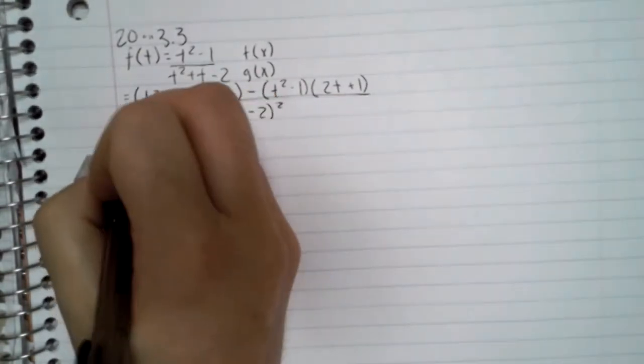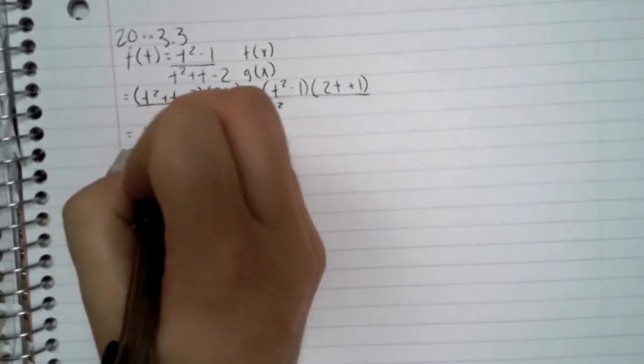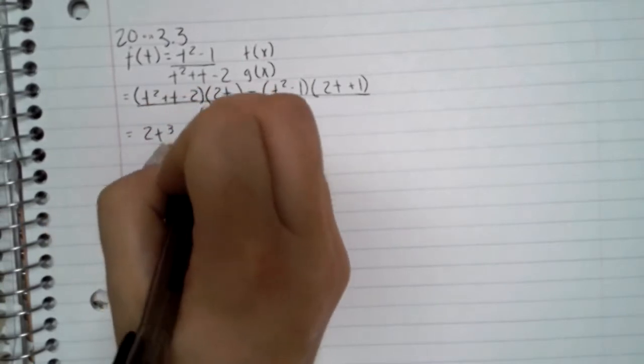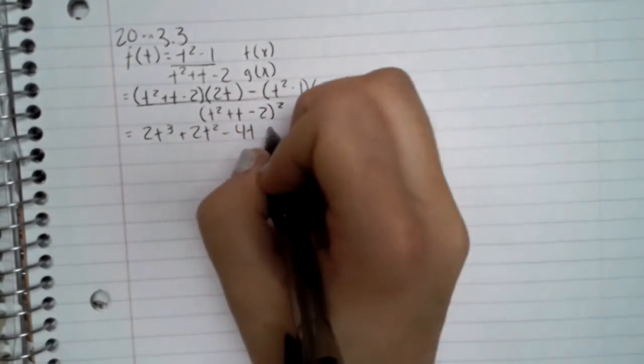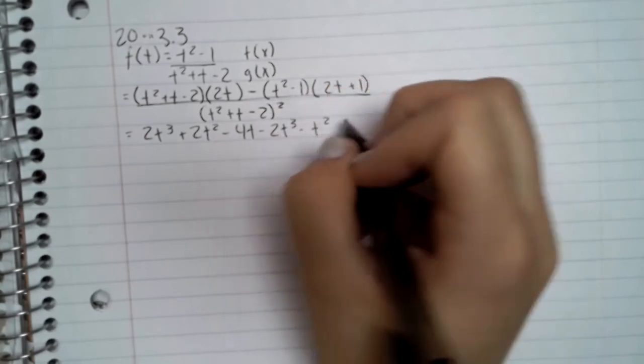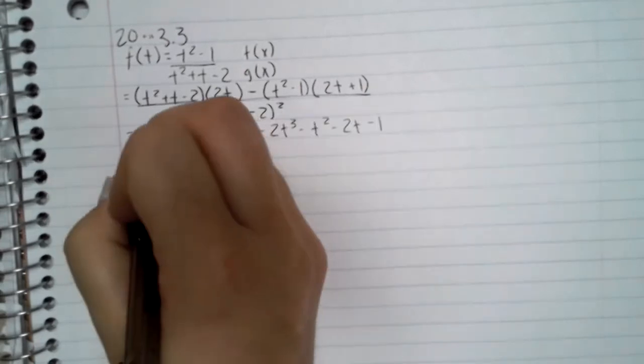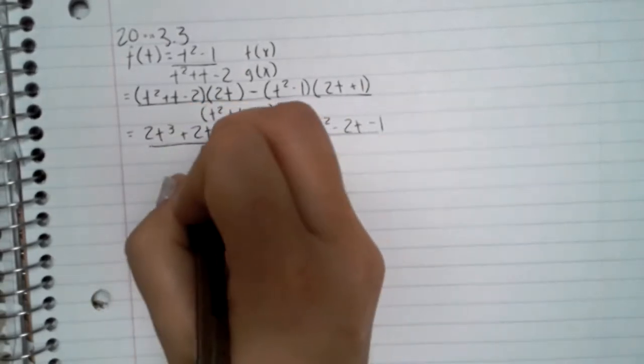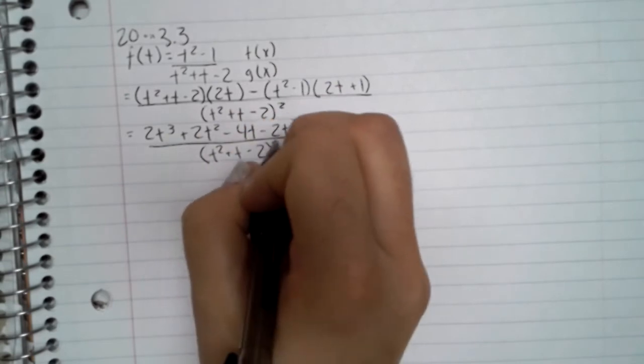And then we work that out. So 2t cubed plus 2t squared minus 4t minus 2t cubed minus t squared minus 2t minus 1, and that's all over t squared plus t minus 2 squared.